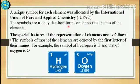A unique symbol for each element was allocated by the International Union of Pure and Applied Chemistry. In short, you can call it IUPAC. The symbols are usually the short forms or abbreviated names of the elements.